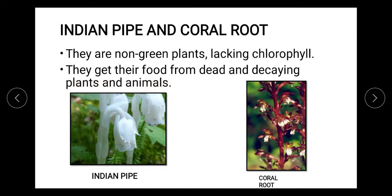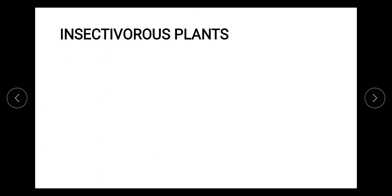When dead and decaying bodies are decomposed, they are converted into simpler, non-toxic substances. The soil then absorbs all the nutrients from these non-toxic bodies, and once absorbed by the soil, these plants — Indian pipe and coral root — obtain their nutrition from the soil.